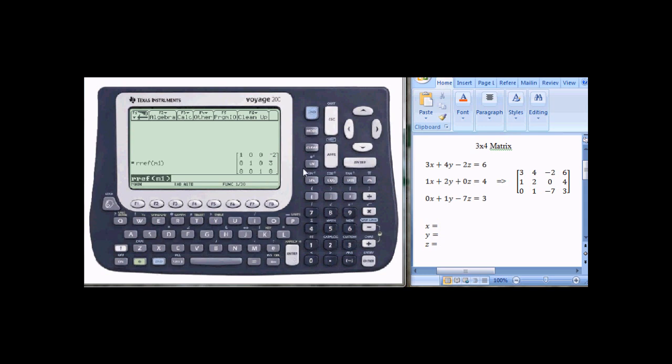And here are the answers to the problem. X is negative 2. Y is 3. And Z is 0. And this is seen from the last column in this matrix.